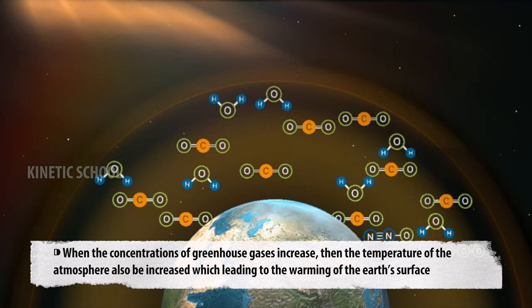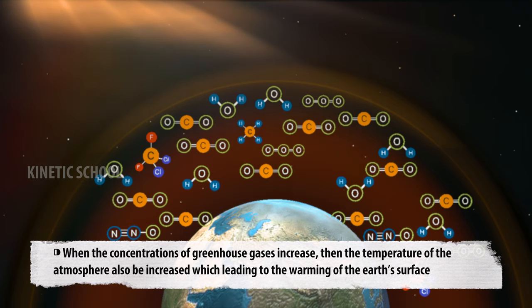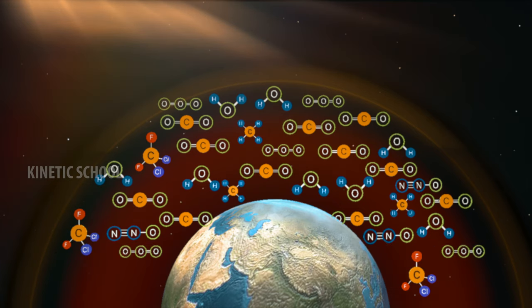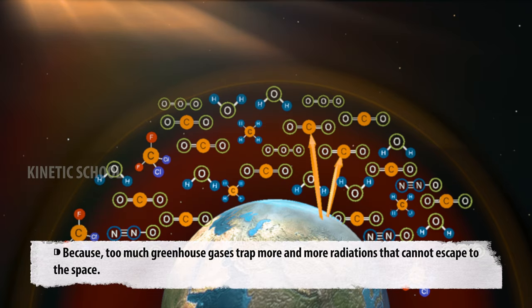When the concentrations of greenhouse gases increase, then the temperature of the atmosphere also increases, which leads to the warming of the Earth's surface. Because too much greenhouse gases trap more and more radiations that cannot escape to space.